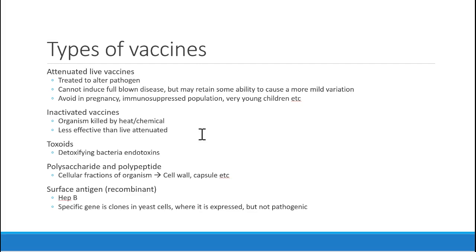Otherwise there aren't many contraindications to vaccines. The other types — inactivated, toxoids, polysaccharides, surface antigen — are different ways to make a vaccine, but they all do the same thing and aren't going to cause any disease. They might cause a local reaction, and some people think they're getting sick. I hear people say, 'I got the flu shot and it gave me the flu.' That flu shot didn't give you the flu, but you could have mild flu-like symptoms — some malaise, a low-grade fever — because you're stimulating your immune system. Those side effects can occur from that process.